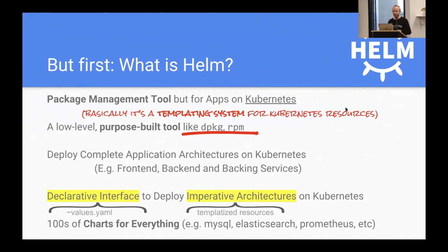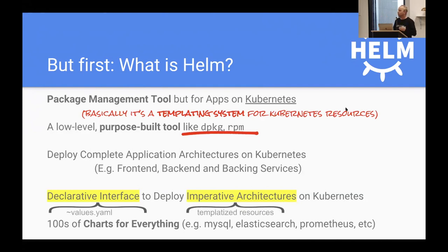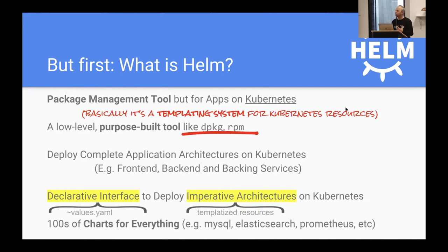Helm is a very simple package management tool. If you're familiar with dpkg or RPM on the command line, that is what Helm is. It lets you deploy an app — for example, MySQL — to your Kubernetes cluster. But unlike dpkg or RPM, with Helm you're deploying a complete application architecture to the cluster: your master and your slaves, your read replicas, or your front-end and back-end and any backing services — all achieved with Helm.